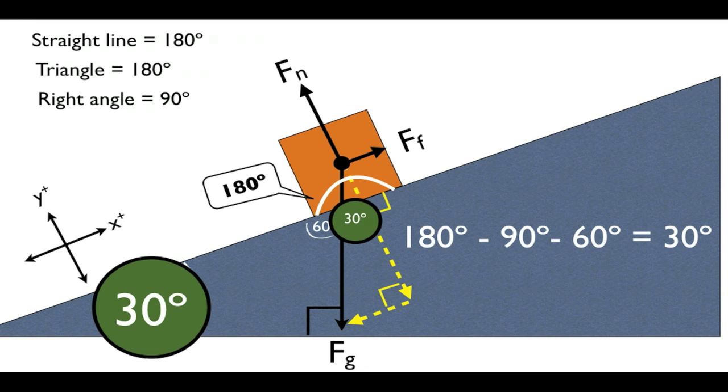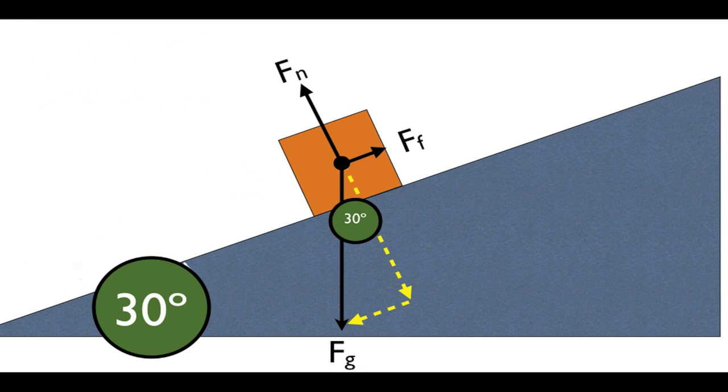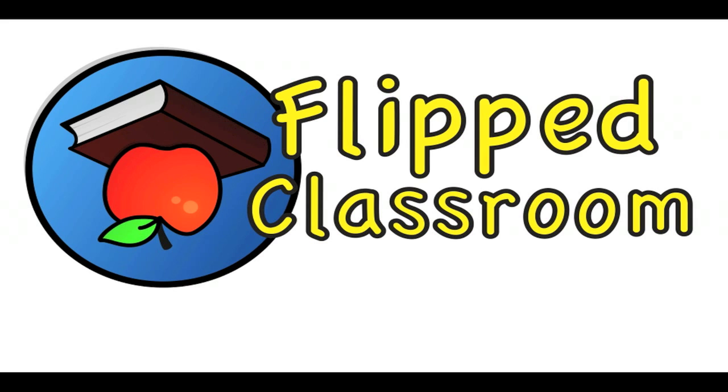I hope this video really helped you visualize why the angle in that small triangle is the same as the angle of our slope. If for some reason you weren't able to get it, leave a comment below and I'll answer it. Or watch the video again and maybe you'll pick something up this time that you didn't last time. Well, until next time, see you later.